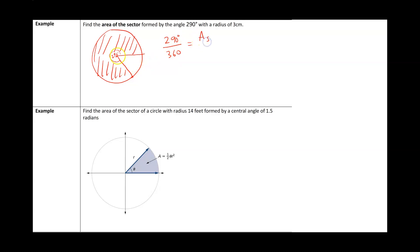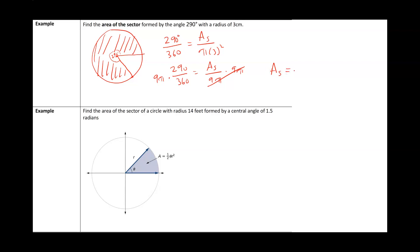The area of the entire circle is pi times r squared. Simplifying, 290 over 360 equals the area of the sector over 9 pi. Multiplying both sides by 9 pi to isolate the area of the sector, in your calculator type 9 pi times 290 over 360. We get that the area of the sector is approximately 22.777 centimeters squared. Area is always in square units because we are squaring the 3 centimeters.